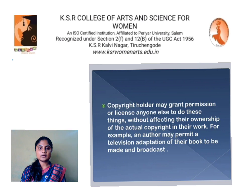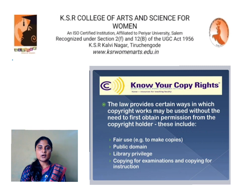The copyright holder may grant permission or license anyone else to do these things without affecting their ownership of the actual copyright in their work. For example, an author may permit a television adaptation of their book to be made and broadcast. The law also provides certain ways in which copyrighted works may be used without the need to first obtain permission from the copyright holder. These include fair use, public domain, library privilege, and copying for examination and instruction.